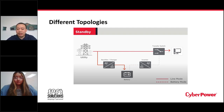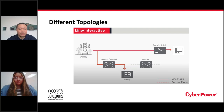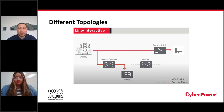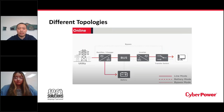The second topology is line interactive. Line interactive protects connected devices from power failure, sags, and surges like a standby does, but also provides automatic voltage regulation against under and over voltage conditions without switching to battery power. It's typically used to protect enterprise network and IT applications.